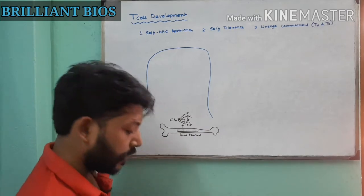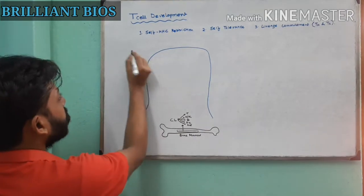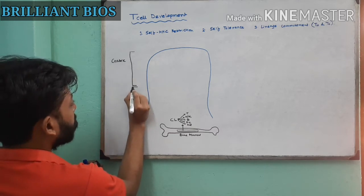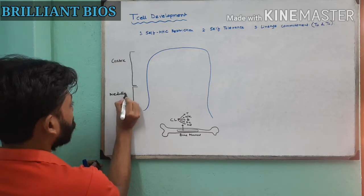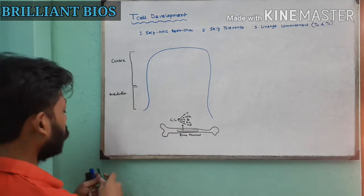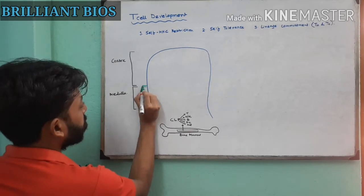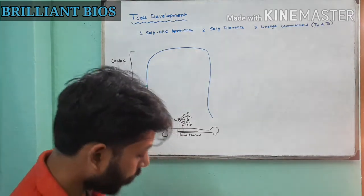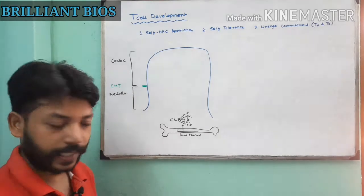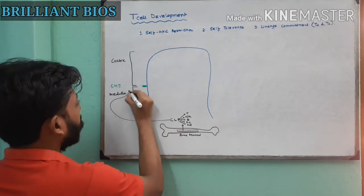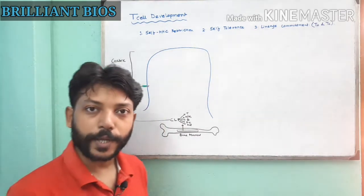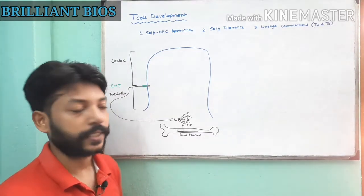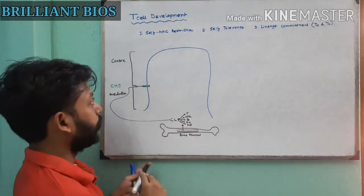Now let me draw a cross-sectional view of the thymus. The thymus consists of two main regions: the cortex and the medulla. In between the cortex and medulla there is a region called the corticomedullary junction, or CMJ. The common lymphoid precursor cells enter the thymus through this corticomedullary junction, because blood vessels are present there.